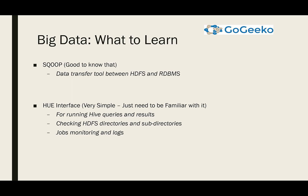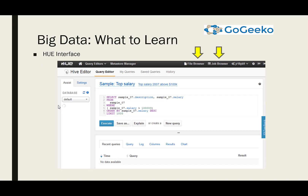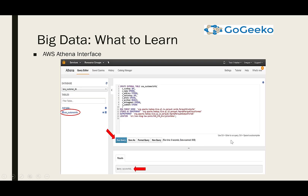Another good thing to know is the HUE interface, mainly for running Hive queries and checking results. There is a query editor, results panel, a file browser, and a job browser. The job browser lets you check running jobs, and the file browser lets you navigate directories without using ls and cd commands, making things simpler. Learning HUE has a double benefit — HUE's interface is almost identical to AWS Athena's interface, which is used for querying files on S3 in AWS. So once you learn HUE, you essentially know AWS Athena as well.